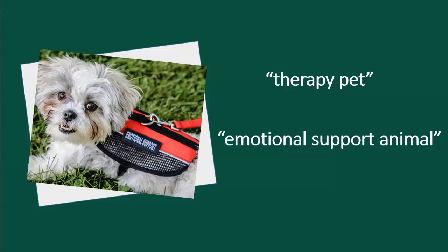You might be using the term 'therapy pet' to describe a search term, but as you begin to see results, you may notice researchers and the databases might instead be using 'emotional support animal,' which may yield better results. This is why it's important to come up with different keywords to use when you're not finding what you're looking for. Different keywords might work better in different databases. This video will walk you through the different steps to help you develop keywords for your own research.